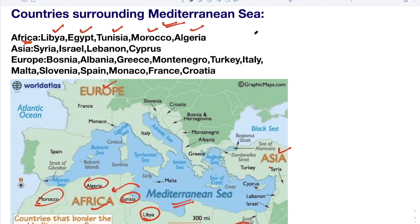Now go to the next continent, Asia. The Asian countries bordering the Mediterranean Sea are Syria, Israel, Lebanon, and Cyprus — four countries. Observe on the map: this is Syria, this is Israel, this is Lebanon, and this is Cyprus. Cyprus is an island and it is also a country of Asia which borders the Mediterranean Sea.